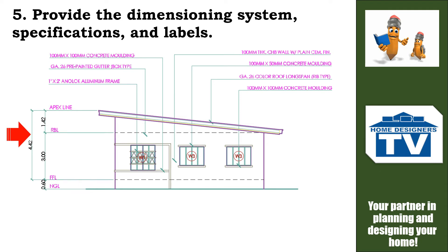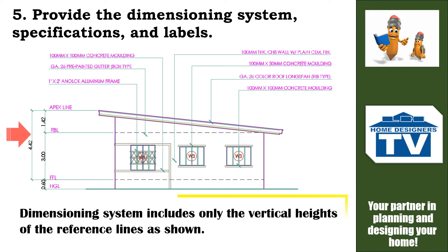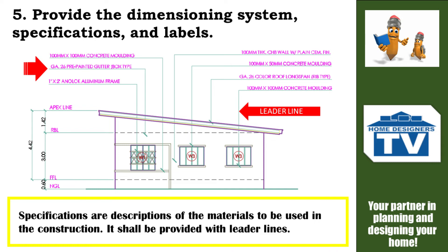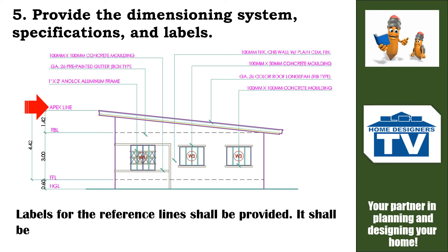Step 5: Provide the dimensioning system, specifications, and labels. The dimensioning system includes only the vertical heights of the reference lines as shown. Specifications are descriptions of the materials to be used in the construction, and shall be provided with leader lines. Labels for the reference lines shall also be provided, abbreviated as shown.